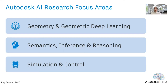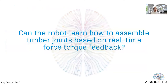The simulation control area includes topics like surrogate modeling, system simulation and control systems, how people behave in buildings and other environments, agent-based and robotic simulations, and reinforcement learning. We started by asking this question: can the robot learn how to assemble timber joints based on real-time force-torque feedback?